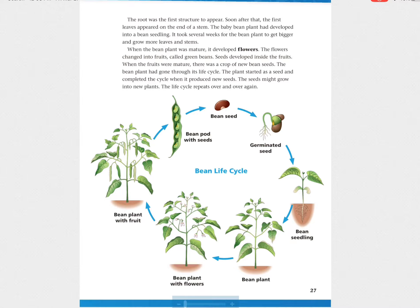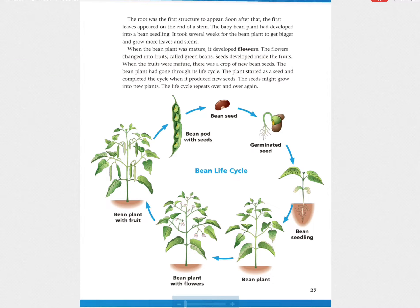It took several weeks for the bean plant to get bigger and grow more leaves and stems. When the bean plant was mature, it developed flowers. The flowers changed into fruits called green beans. Seeds developed inside the fruits. When the fruits were mature, there was a crop of new bean seeds. The bean plant had gone through its life cycle. The plant started as a seed and then completed the cycle when it produced new seeds.